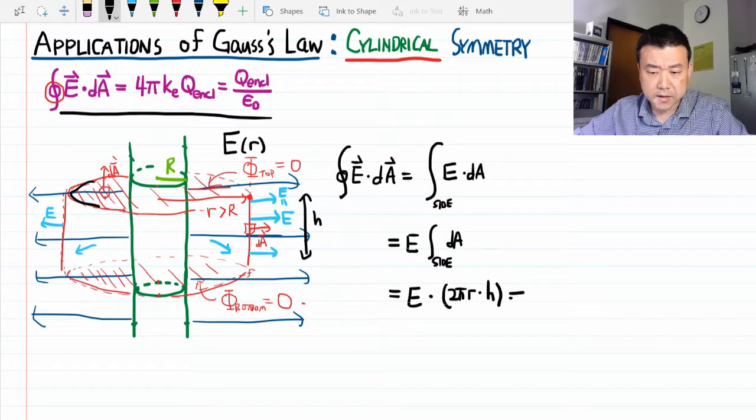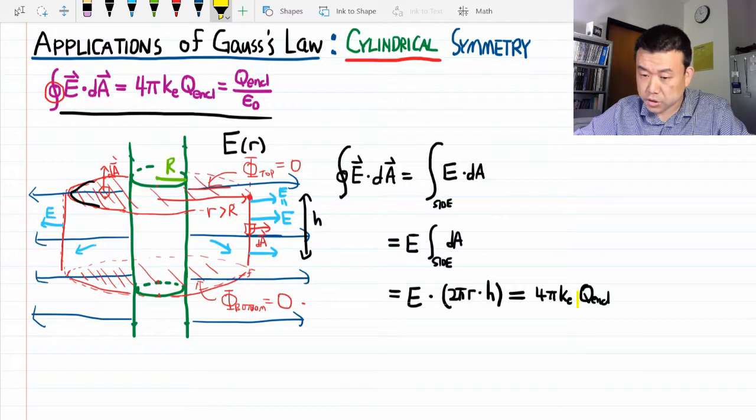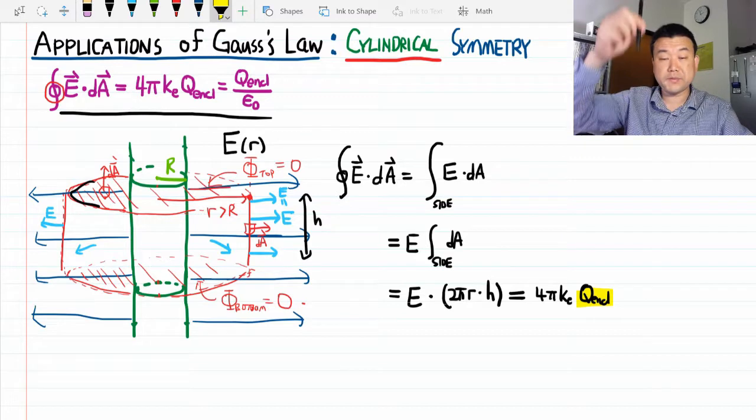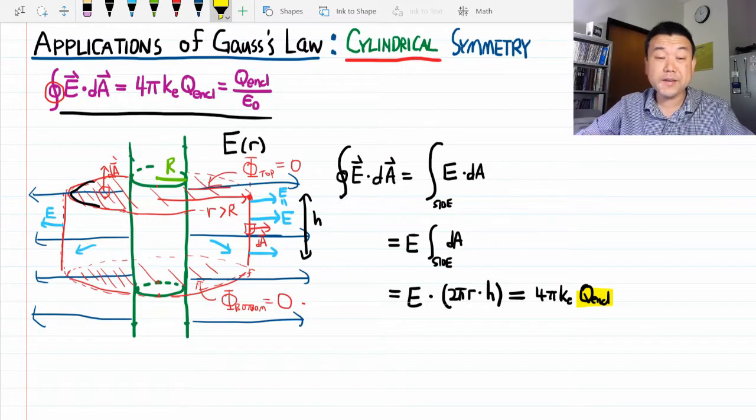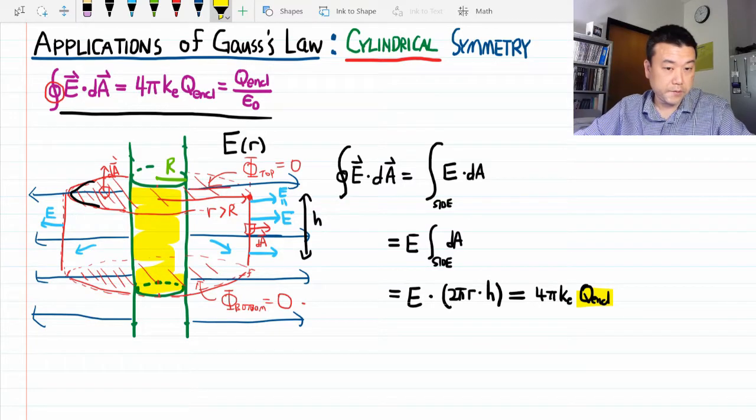For the right-hand side, we're looking at charge enclosed times constants. For this charge enclosed, it can't be the charge of the entire wire—the wire being infinite, that's infinite charge. We really only mean the charge enclosed within the Gaussian surface we defined.